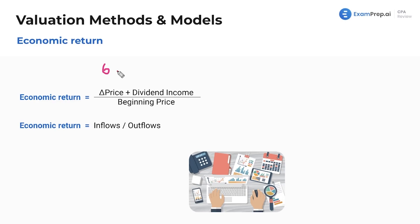We'll have an example so I'm not going to get into this too much. If you bought a stock for 55 and it's worth 60 now, that's a five dollar gain — plus let's say five dollars of dividends — so that's 10 divided by the beginning price of 55. That gives you about 18%. That's just economic return: overall, what's the return on something?